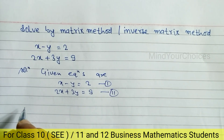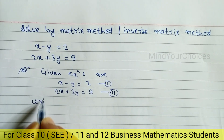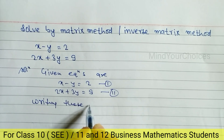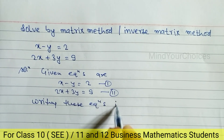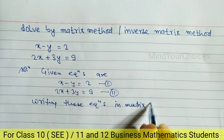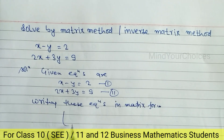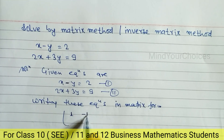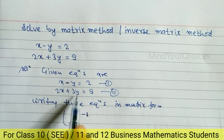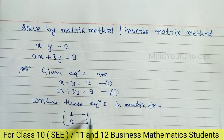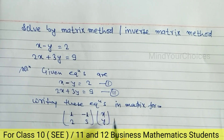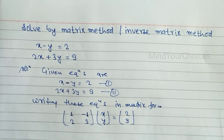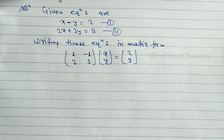First of all we have to write these equations in matrix form. The coefficient of x in equation one is one, and the coefficient of y is minus one. The coefficient of x in equation two is two, and the coefficient of y is three. The variable matrix is x and y, and the constant matrix is two and nine.